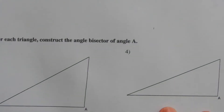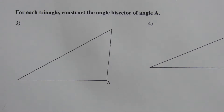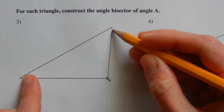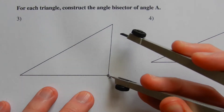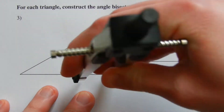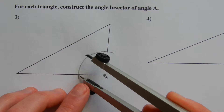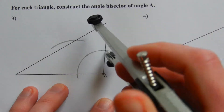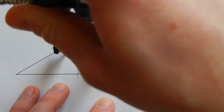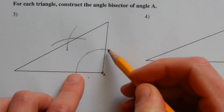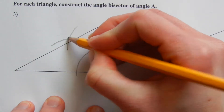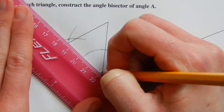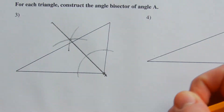Let's move on to number three. For three and four it says to construct the angle bisector of angle A within a triangle, but the steps are the same. Using our compass, we find intersection marks that are the same distance from vertex A. From those intersection points we draw another mark within that angle, and since we went the same distance from each arc, we can draw a line through vertex A and that intersection to form our angle bisector.